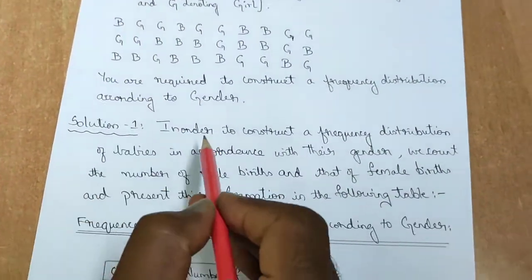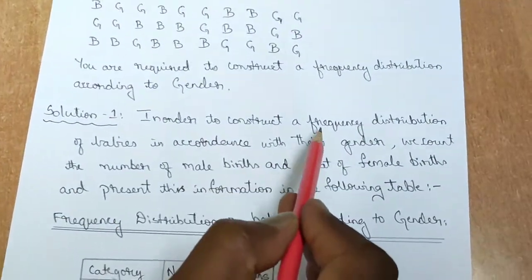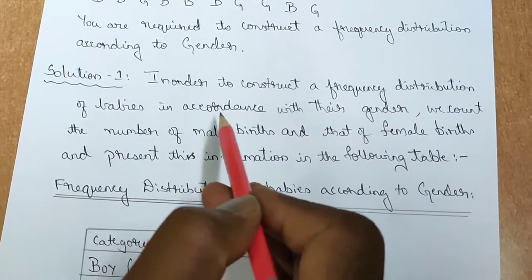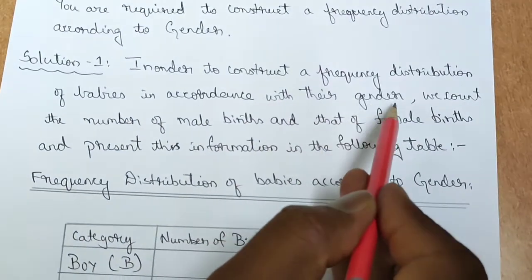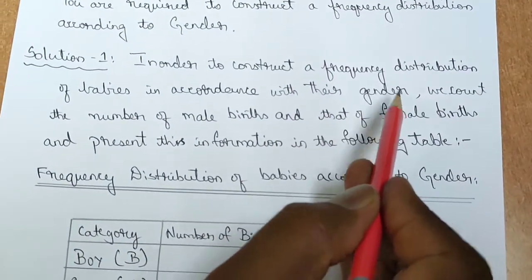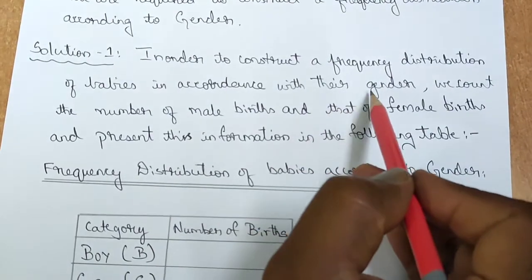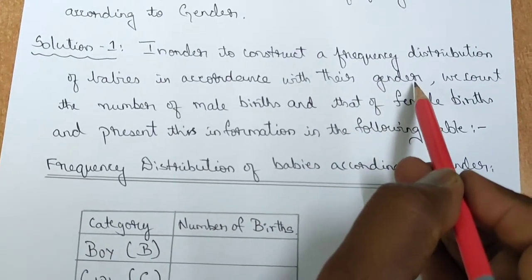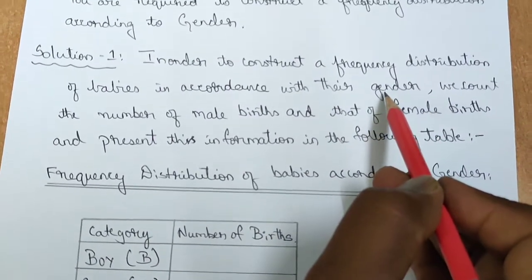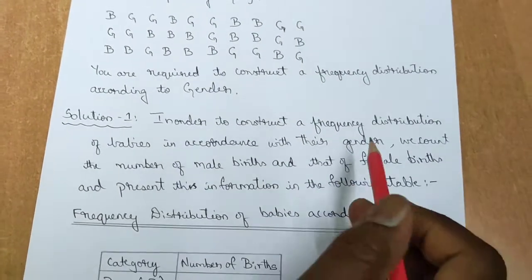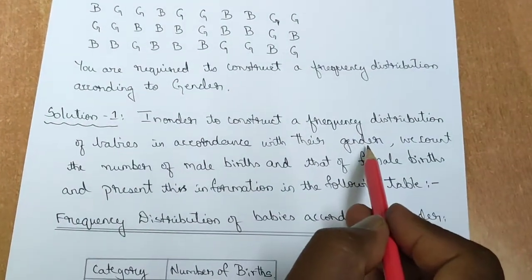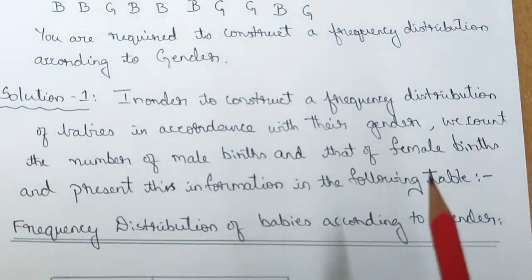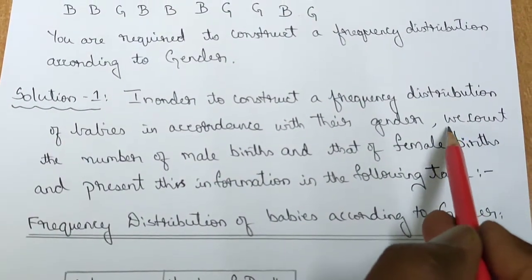The solution says: in order to construct a Frequency Distribution of babies in accordance with their gender, we are speaking only about one characteristic, which is called gender. Hence, the table which we form can also be called as a one-way table or a simple table.